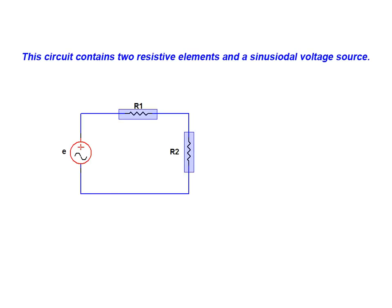This circuit contains two resistive elements and a single sinusoidal voltage source. Here we can see the typical output waveform produced by this type of source.